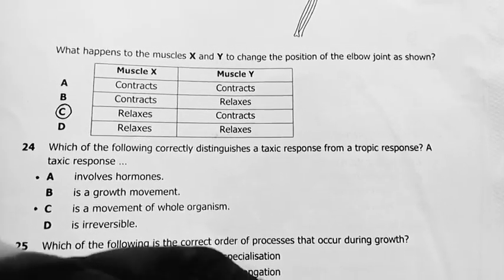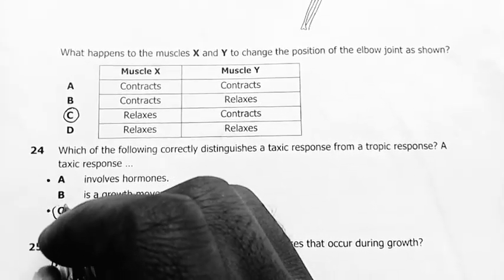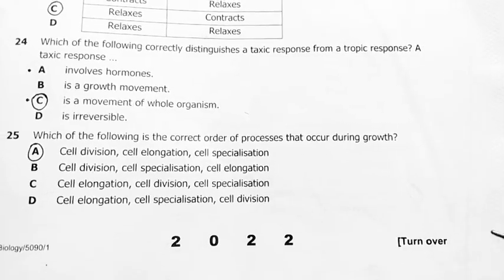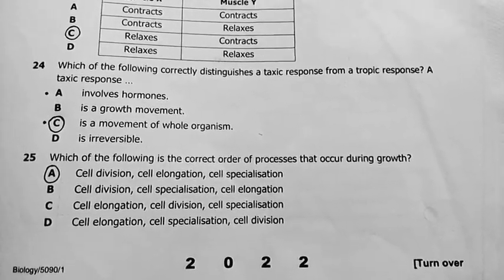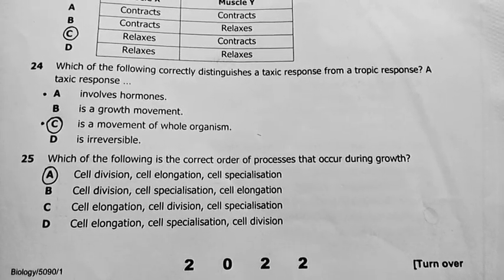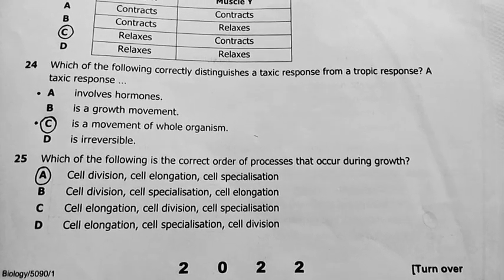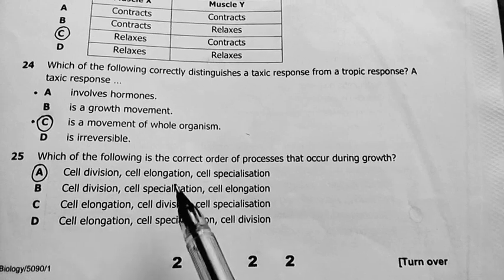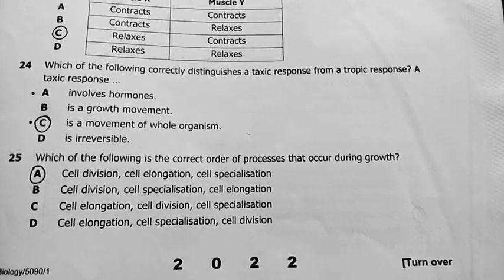So C is my best answer for question 24. Number 25: which of the following is the correct order of processes that occur during growth? Cell division, cell elongation, cell specialization — this is in plants.